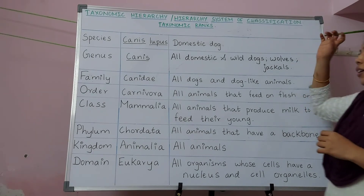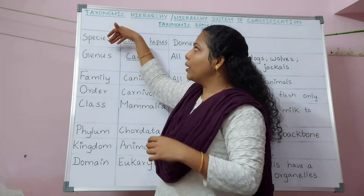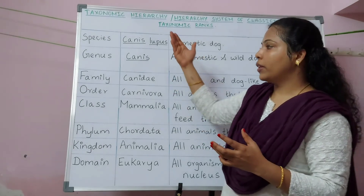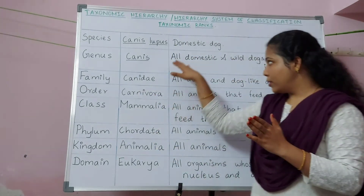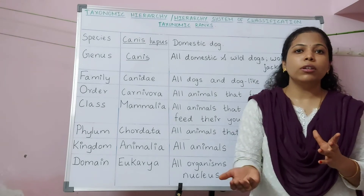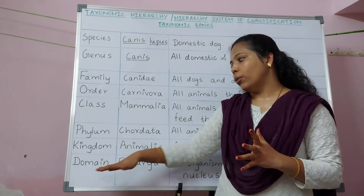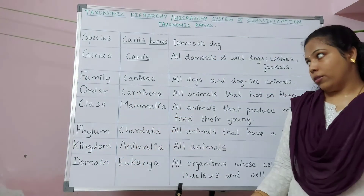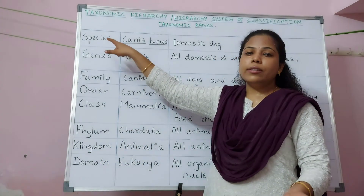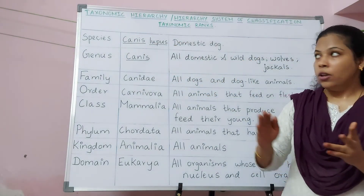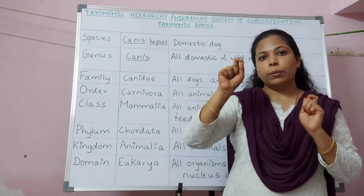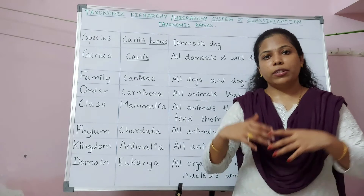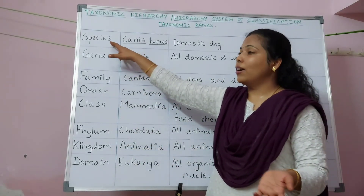Only domestic dogs can reproduce among themselves — a domestic dog cannot reproduce with wolves. This species can again be categorized into subspecies. Subspecies includes categories of domestic dogs that differ from each other based on geographical location. Domain is a very broad and general classification, while species is very specific, including organisms with the ability to reproduce among themselves.